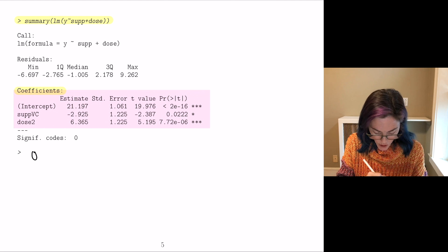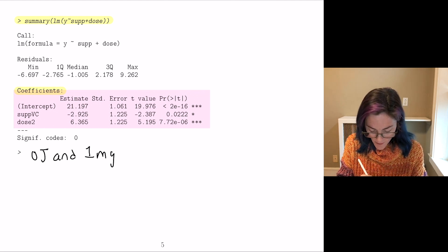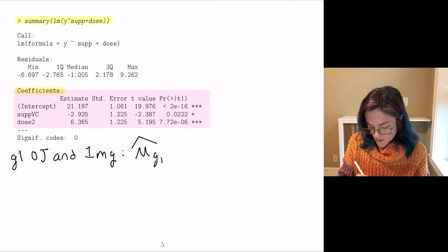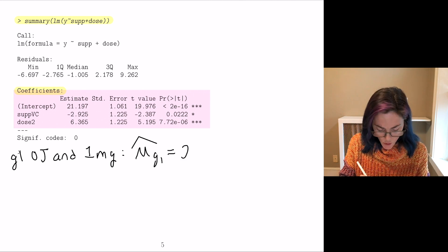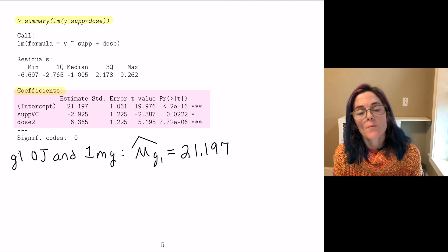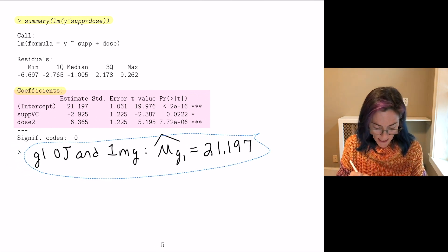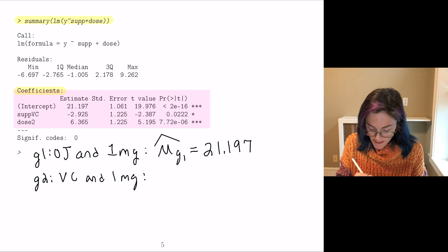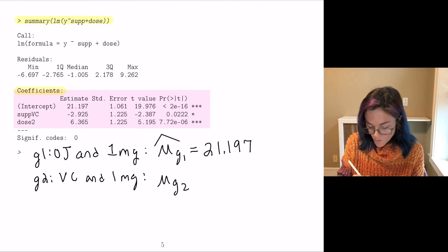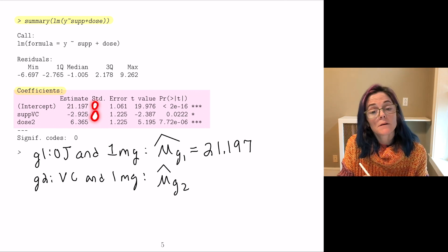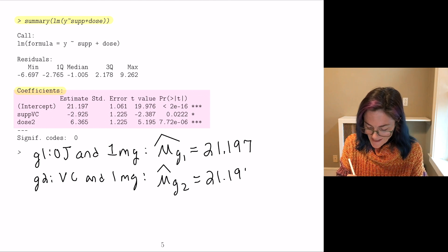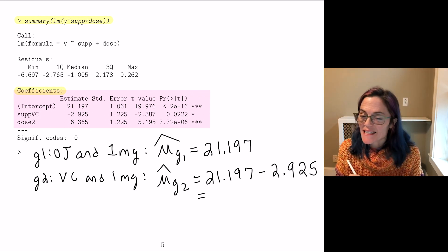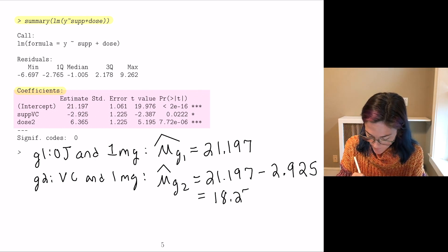So if we have orange juice and one milligram, I call this group one, μ_group1. And the estimate that we get, we can read it's 21.197. Now we have three more groups, which is not too many. So I'll just show all three. So let's say the next group is vitamin C and one milligram per day. The estimate that we get here for this group mean, we take the intercept and add. So this would be 21.197 minus 2.925, which is 18.272.